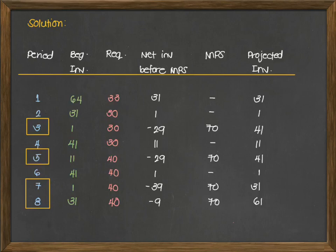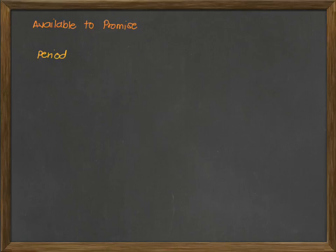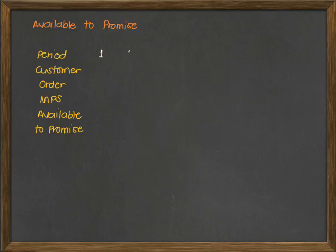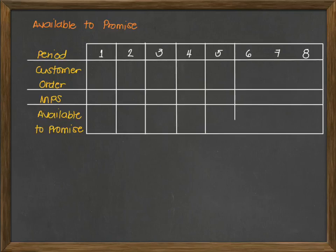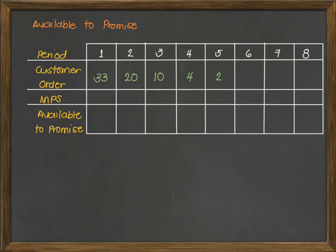For our available-to-promise table, we will write the following information in tabular form: period, customer order, MPS, and the available to promise — for weeks 1 to 8. The customer orders are 33, 20, 10, 4, and 2 for periods 1 to 5. We will then write the MPS values for each respective week.